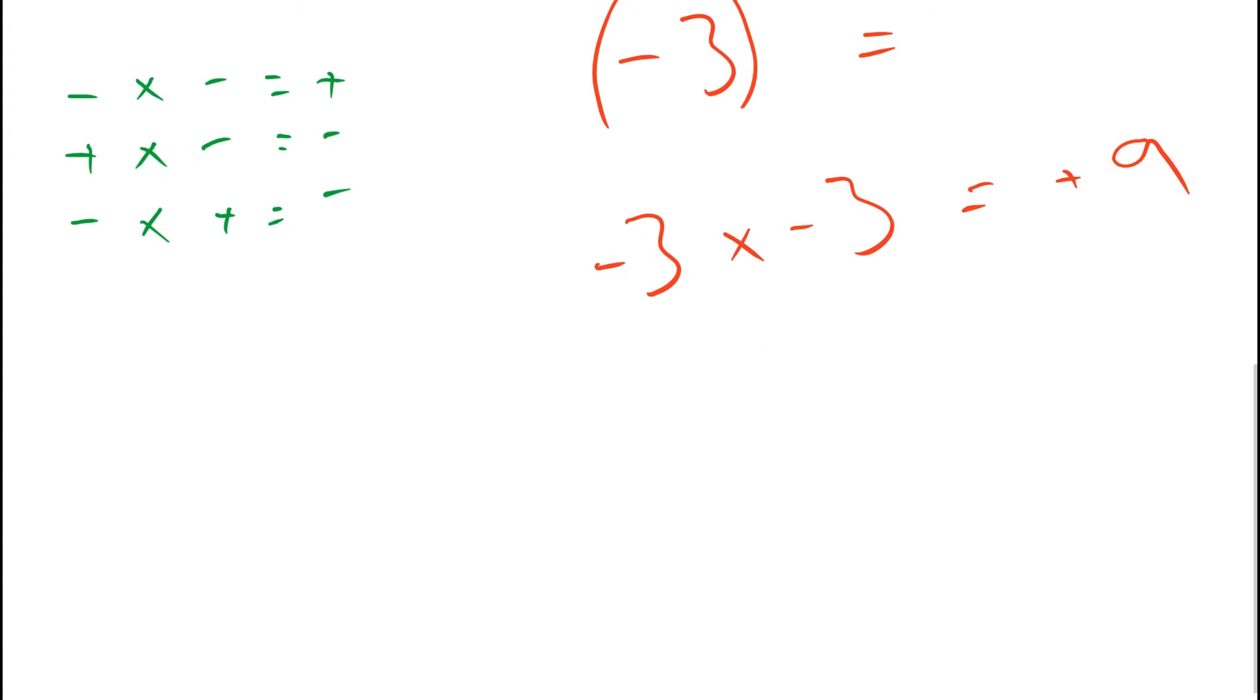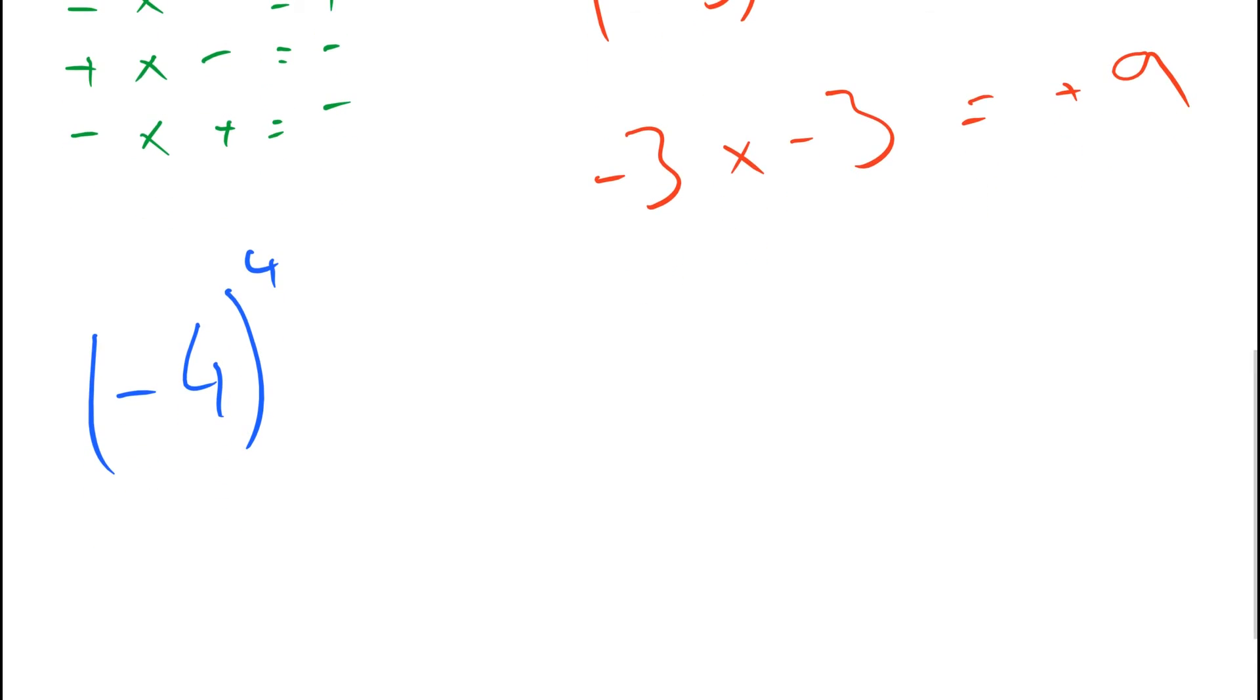Okay let's do one last one. What about let's do a hard one. Minus 4 to the power of 4. Okay hopefully you know by now that means you can write out the number 4 times because there's a little 4 up here. And we have a times in between.